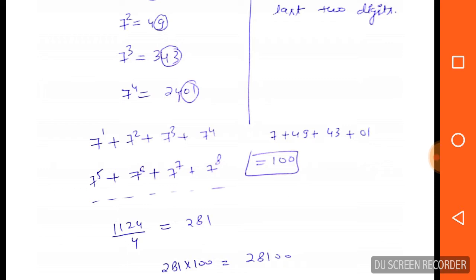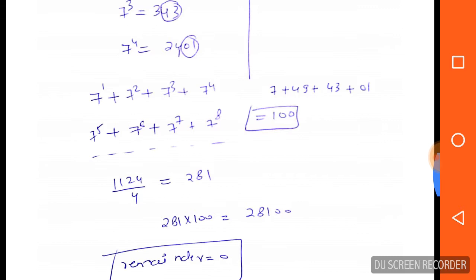So we can make pairs of four: 1, 2, 3, 4, 5, 6, 7, 8. The total 1124 divided by 4 is 281. Now every summation will have 100 as its last two digits.